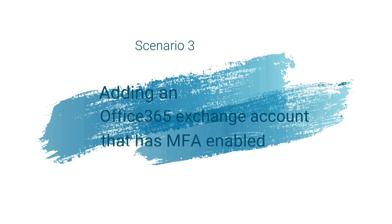In the next scenario, we're adding an email account that has MFA (multi-factor authentication) turned on. The account setup fails no matter what password you use — whether an app password or regular password. In that case, check if Outlook is using modern authentication or basic authentication. If Outlook is using basic authentication and your email account has MFA enabled, there's a possibility the account setup will fail. Microsoft has documentation that discusses this.